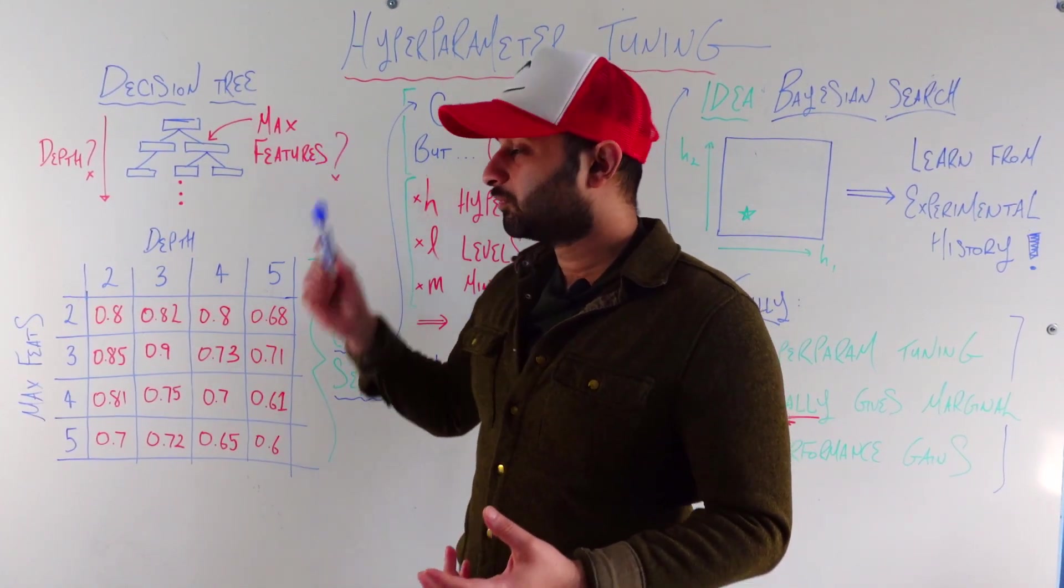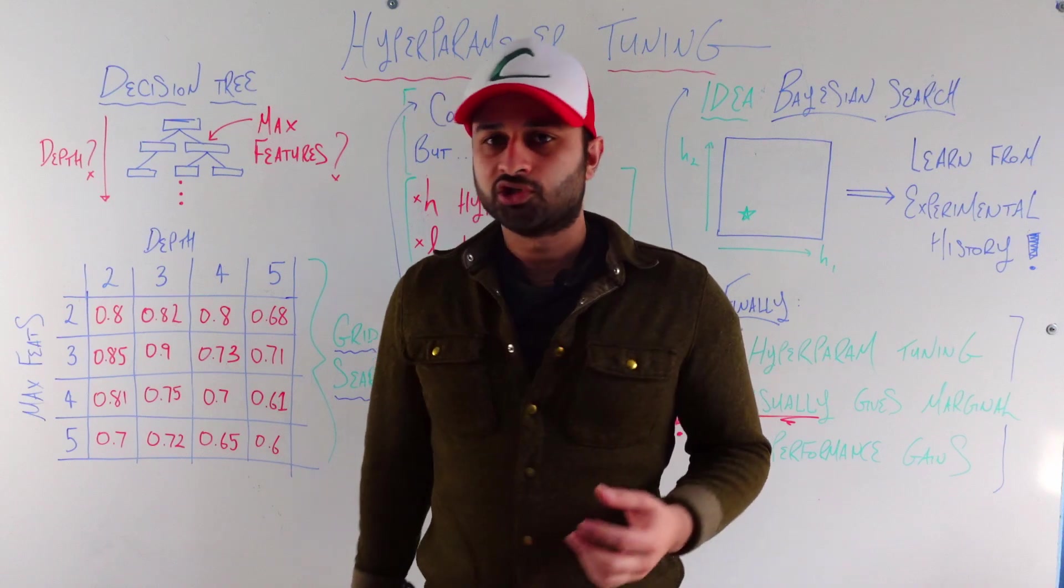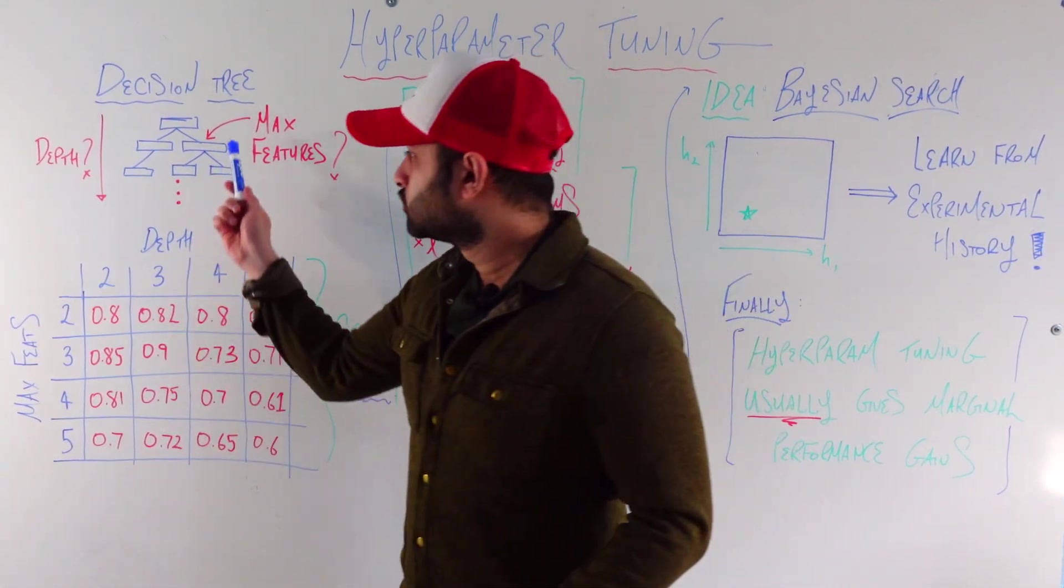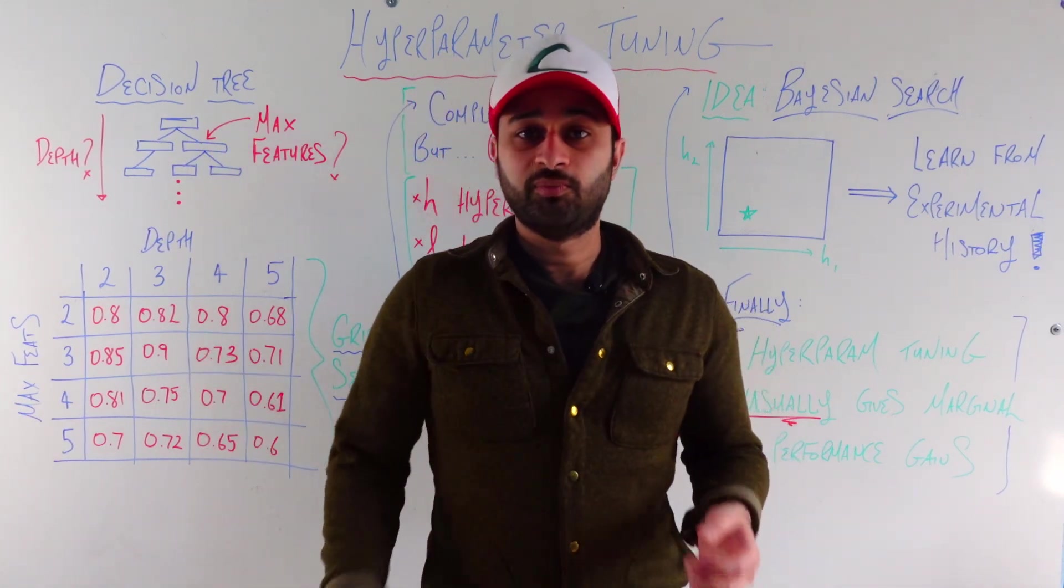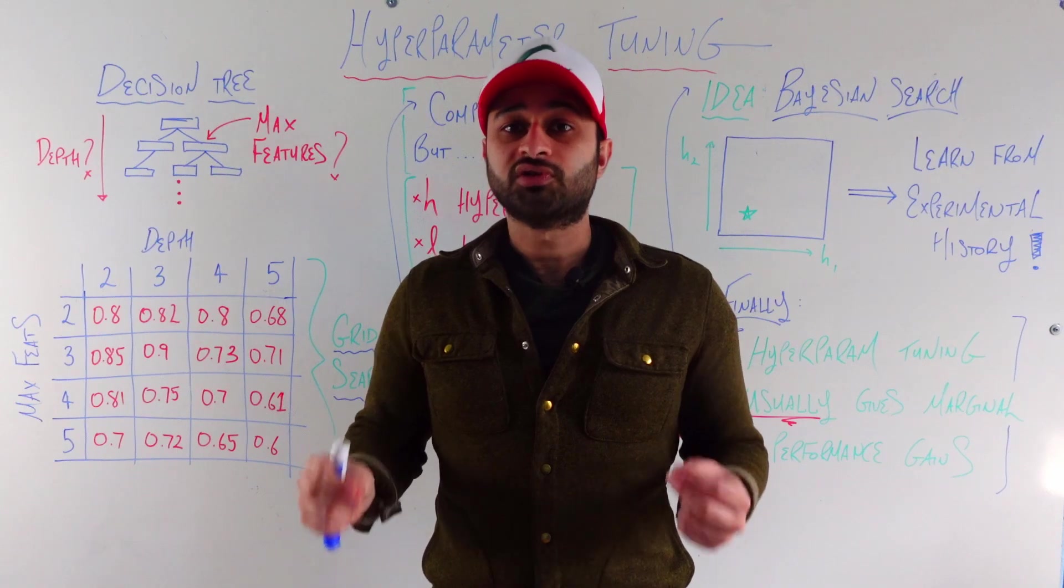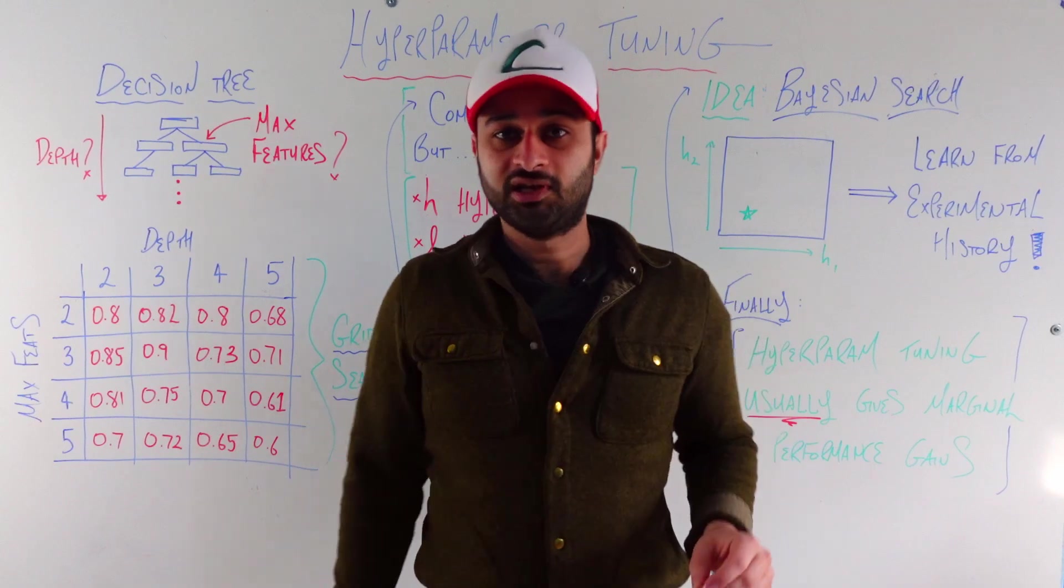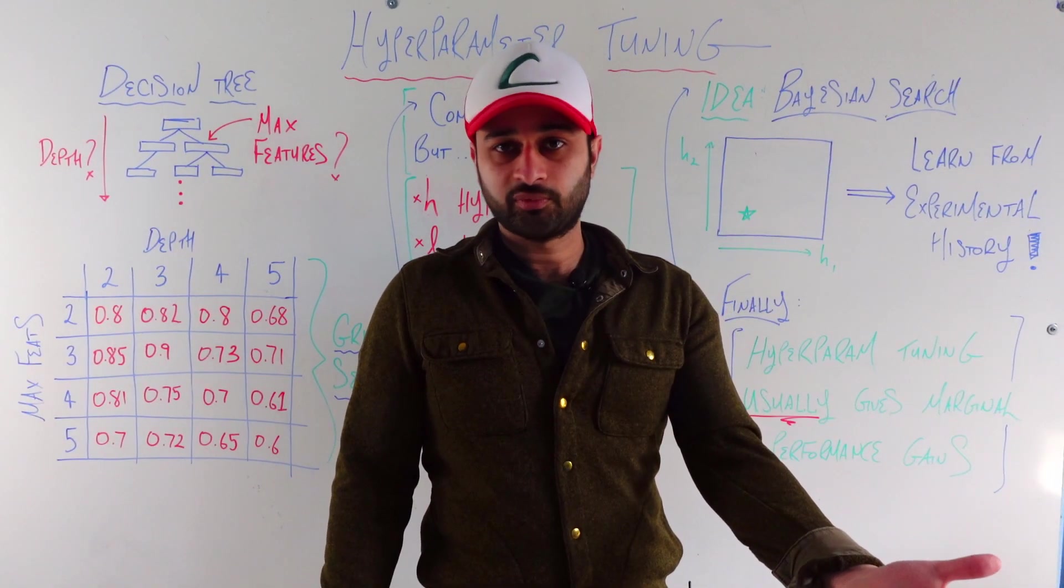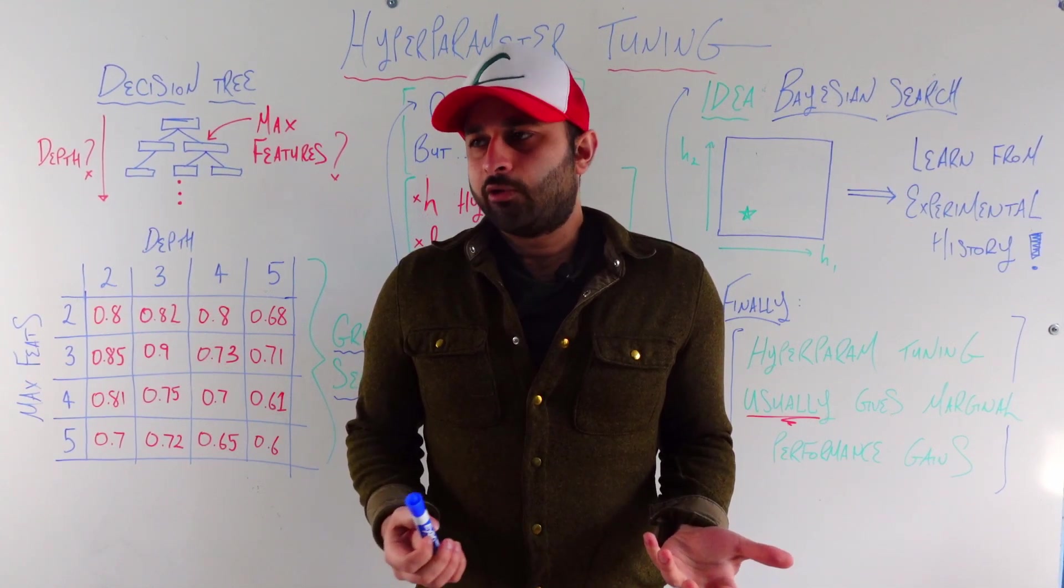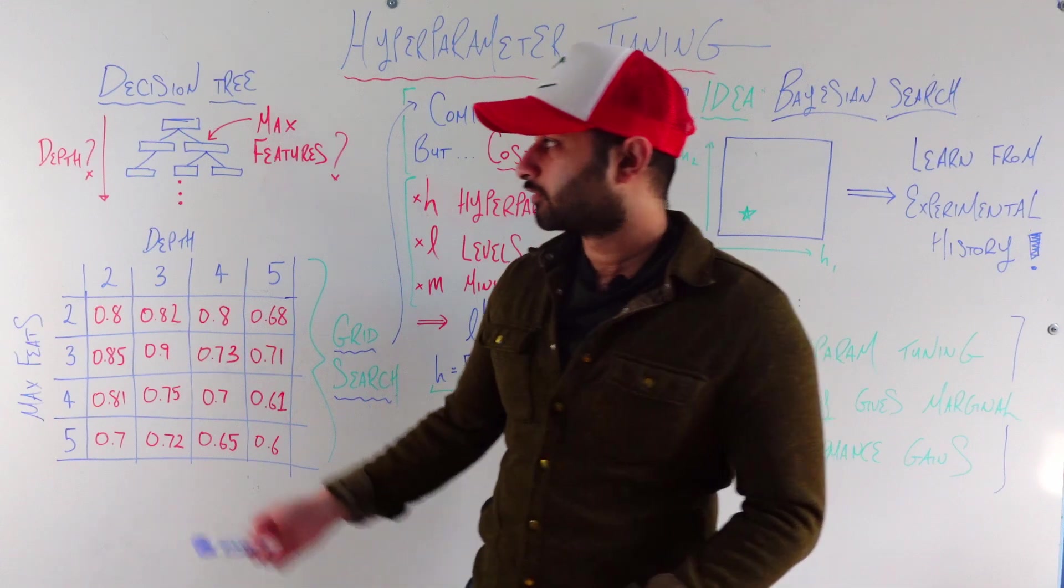Another hyperparameter is maximum number of features that you're allowed to consider at each of these internal nodes. So to go a little bit deeper into how decision trees work for a moment, at each of these internal nodes, you're basically picking which of the features out of all the features you have is going to be the most valuable to split on at this moment in time. And if we don't specify this hyperparameter, then it has all of the features available to it at every single internal node. Now, this might seem like a great thing. Why would we not want to include all the features at our disposal? But we run into the same problem as with this depth hyperparameter.